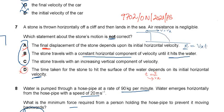If the velocity increases, time decreases — it is not directly proportional. So the statement that the time taken to hit the water depends on the initial horizontal velocity is incorrect. Therefore, D is the correct answer to the question.